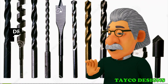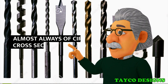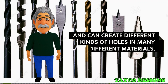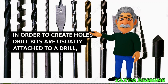Drill bits are cutting tools used in a drill to remove material to create holes, almost always of circular cross section. Drill bits come in many sizes and shapes and can create different kinds of holes in many different materials. In order to create holes, drill bits are usually attached to a drill, which powers them to cut through the workpiece, typically by rotation.